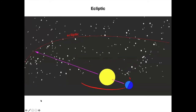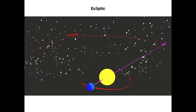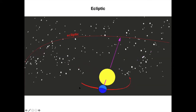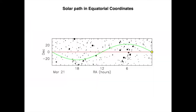Here you can see it's us who are orbiting the sun — we go around the sun — but if you put yourself in our reference frame, it is the sun that is moving. The motion of the sun against the background distant stars describes the ecliptic. Here you have the solar path in equatorial coordinates: the motion of the sun in right ascension and declination.